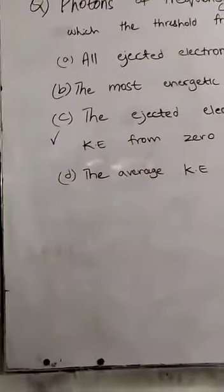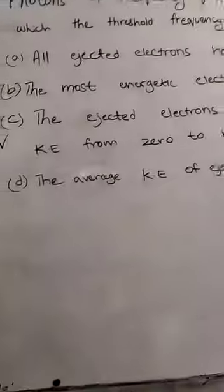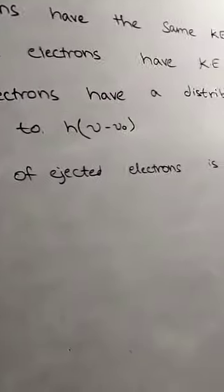Option C: The ejected electrons have a distribution of kinetic energy from zero to H nu minus nu not. Option D: Average kinetic energy of ejected electrons H nu not.